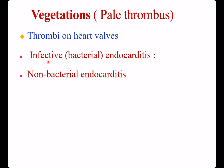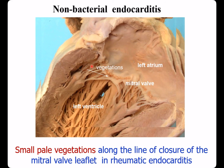Vegetations are pale thrombi on heart valves. Here, this is rheumatic endocarditis. Small pale vegetations distributed along the lines of closure of the mitral valve leaflet. They are firm and not easy to fall off — this is non-bacterial vegetation.